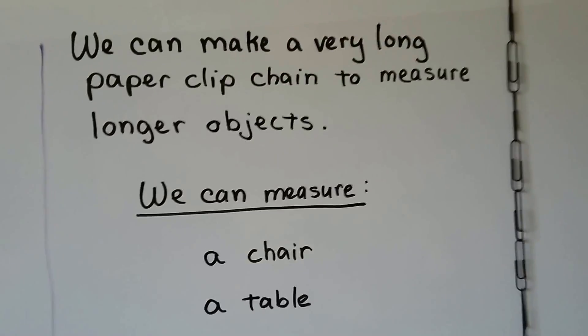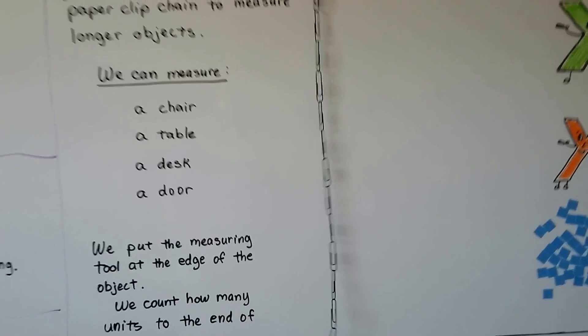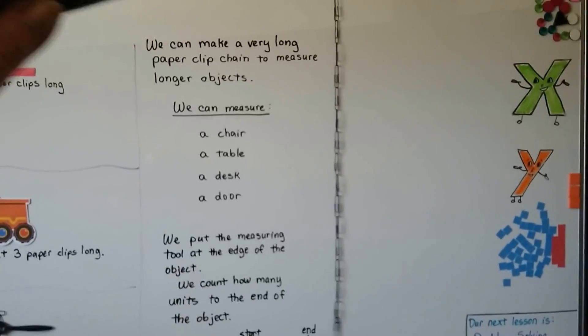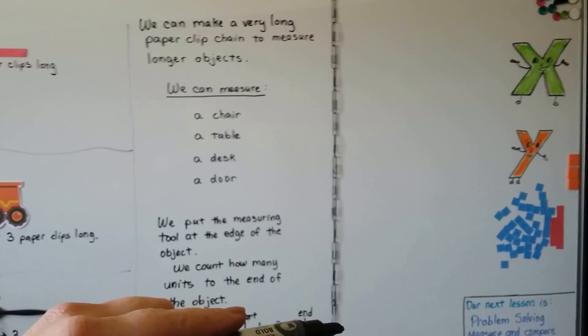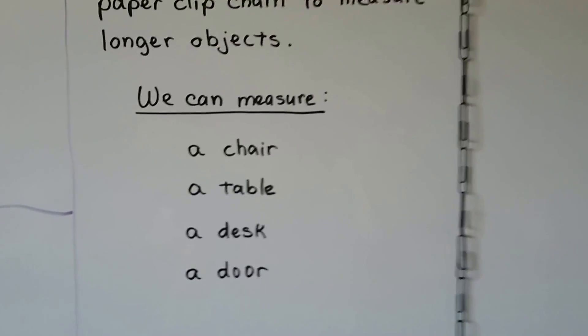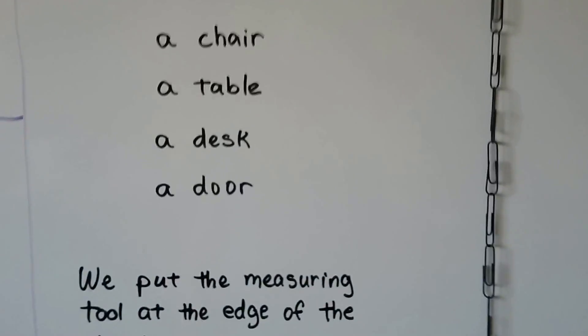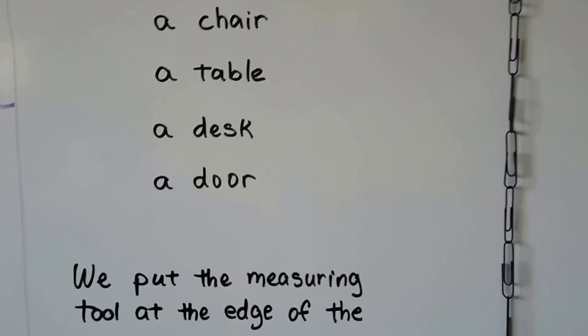We can make a very long paper clip chain to measure larger objects. Look at how long this one is that I made. See how long that is? I made a very, very long one. I could have kept adding more and more and made it even longer. We can measure a chair, a table, a desk, or even a door. We can find how many paper clips long it is.